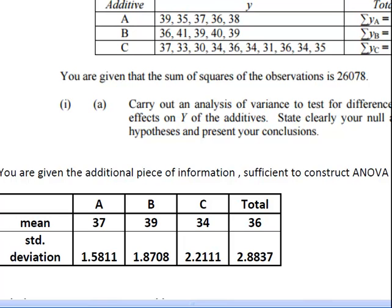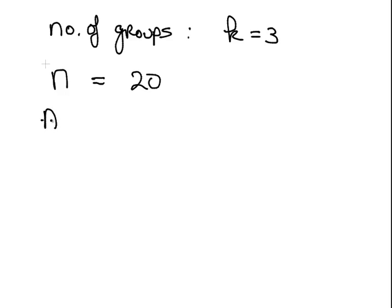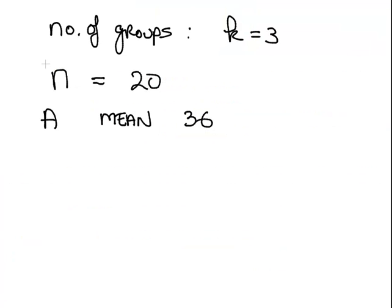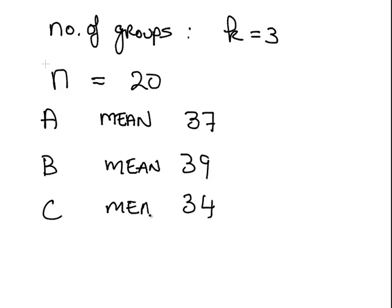You notice I have given the standard deviation, but what is important in these questions is the variance. So I am going to go to my notepad. A, the mean is - what is the mean - let me check that: 37, 39, 34. So that is the mean for A.